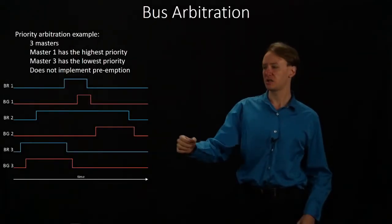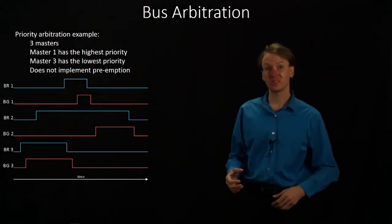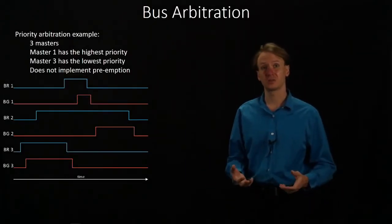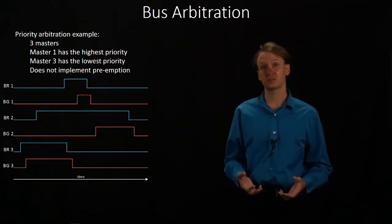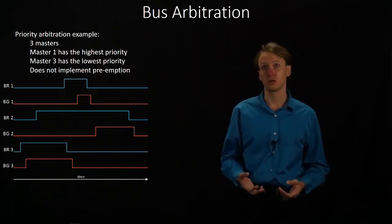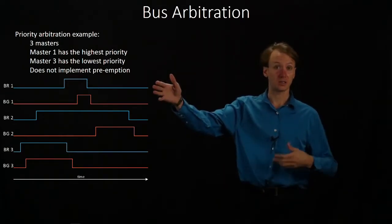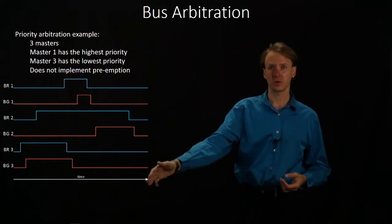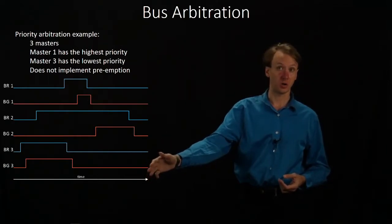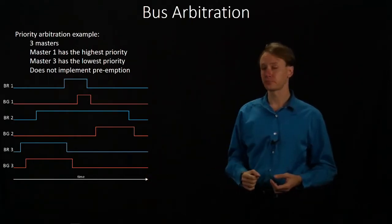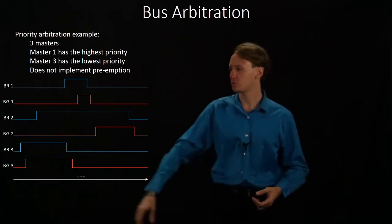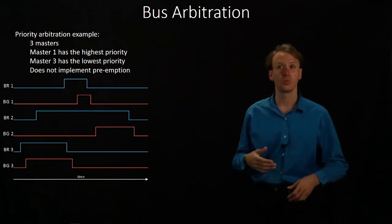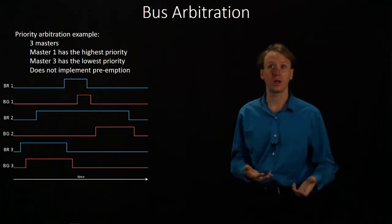Here's an example of a timing diagram for a bus arbiter supporting three different masters, each of which has some priority. Master 1 has the highest priority and Master 3 has the lowest priority. As usual, we'll be able to read this diagram from left to right to see what's happening and when.